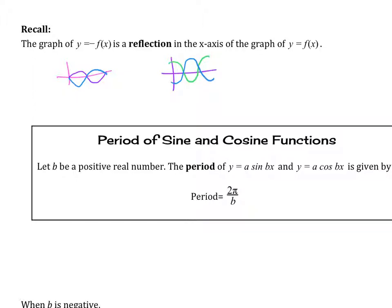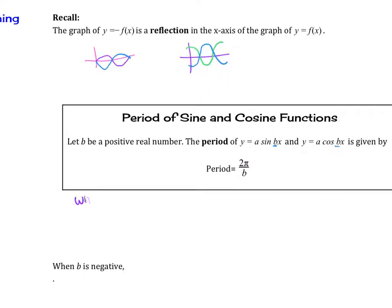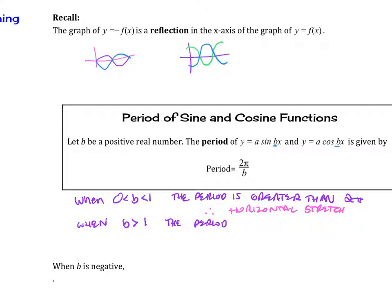Let's talk about the period of sine and cosine functions. Let b be a positive real number. The period of y equals a sine bx and y equals a cosine bx is given by period equals 2π/b. So we know when b is between 0 and 1, the period is greater than 2π. That's our horizontal stretch. Then when b is greater than 1, the period is less than 2π. So therefore, that is a horizontal shrink.